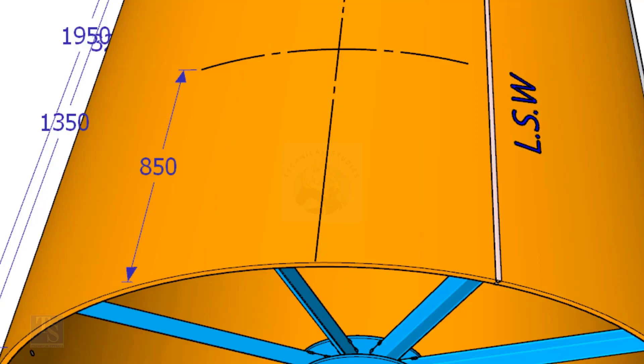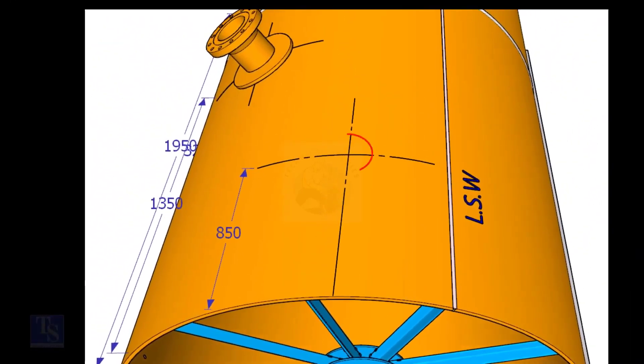Now, mark 850 millimeters exactly on this line from the end of the shell as shown. This is the center of nozzle N1.